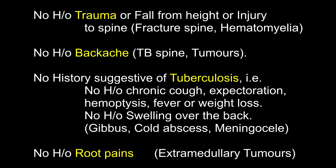There is no history of trauma, fall from height, or injury to the spine. No history of backache. No history suggestive of tuberculosis — no history of chronic cough, expectoration, hemoptysis, fever, or weight loss. How does tuberculosis cause paraplegia? Compression of the cord by a cold abscess or a bone piece following destruction and collapse of vertebral bodies in tuberculosis of the spine. Secondly, intraspinal granuloma formation and vasculitis of the spinal artery.